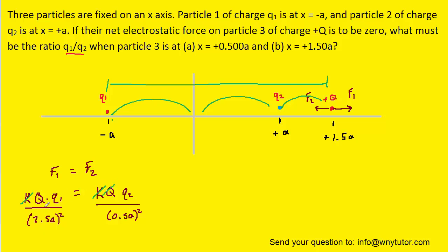Let's cancel out the Ks and the capital Qs, and also square the denominators. We'll then cancel out the A squareds. And then solving for the ratio again, Q1 over Q2 in the same fashion that we did earlier, we will see that we get 25.